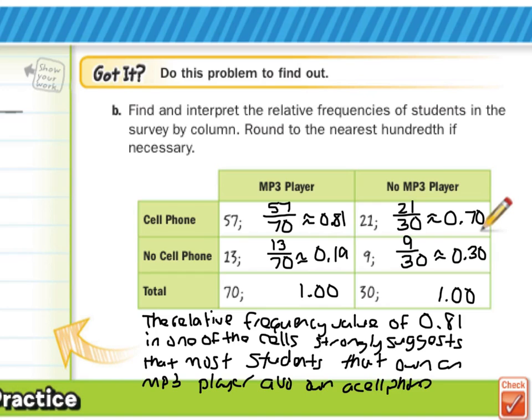So the conclusion we can make from these relative frequencies. We can look at the lower one here as well if you wanted and say okay well this is 19 hundredths, it's a low relative frequency saying that well not many students who own an MP3 player don't own a cell phone. There are a lot of different ways to interpret the relative frequency but if you look for the highest here that might be the best way.